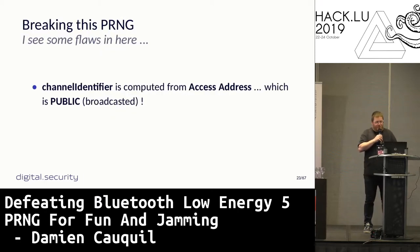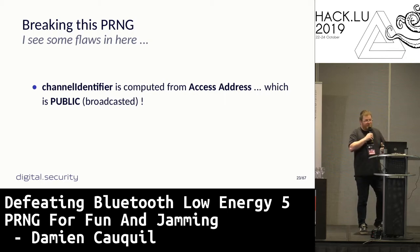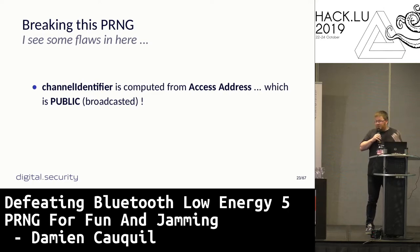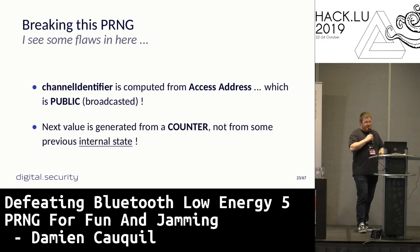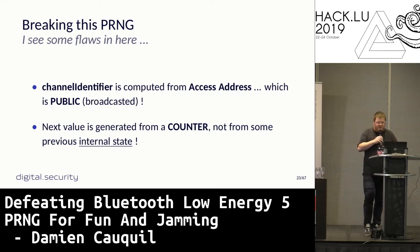So, let's break this PRNG. There are some flaws. First, the channel identifier is a 16-bit value computed from the access address, which is basically public — when a device advertises itself, this access address is known, so we can deduce the channel identifier. The PRNG is driven by a counter, not an internal state — this is not best practice. And looking at the big picture, it's just a function taking a known channel identifier and a counter, generating a 65,000-value sequence.